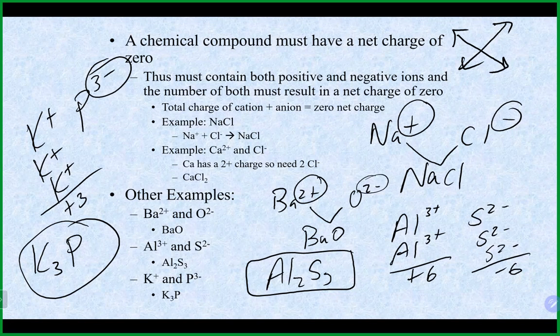The 'swap the charges' trick for writing formulas works about 90% of the time but not always. It's better to think of it as a math problem — how many of each do I need to balance to zero? That wraps up chapter four.